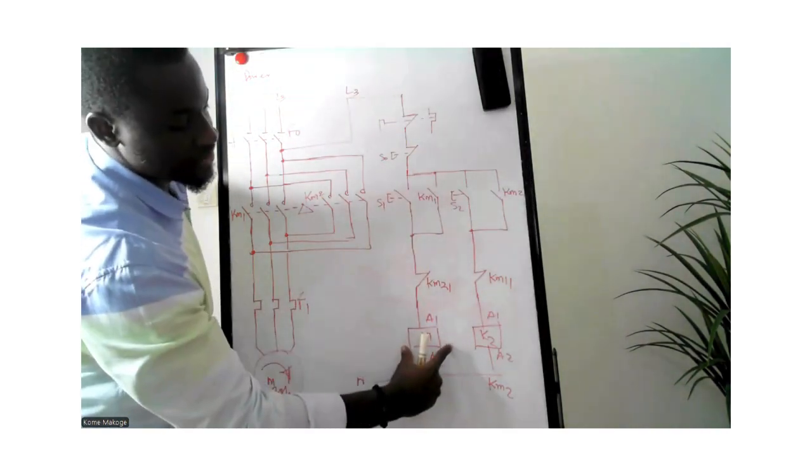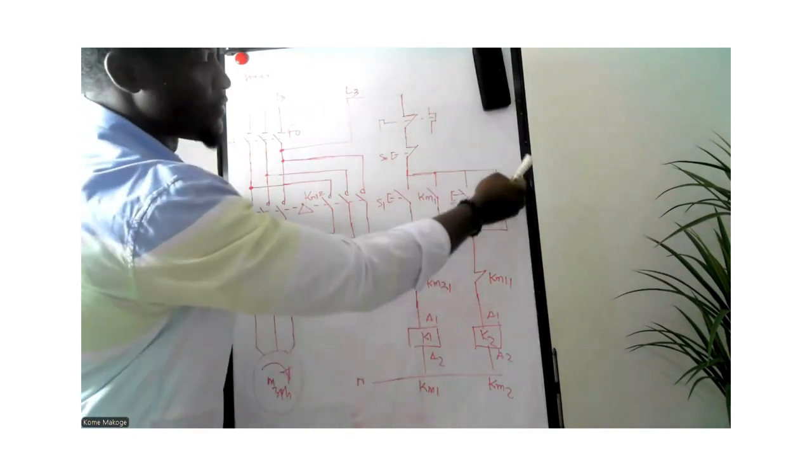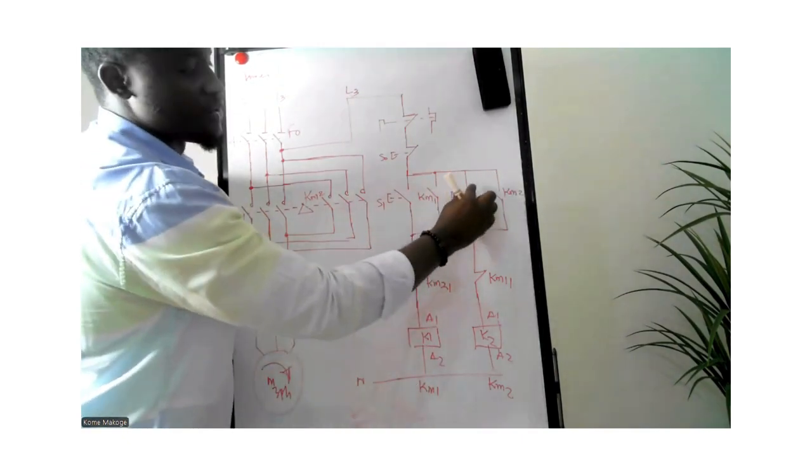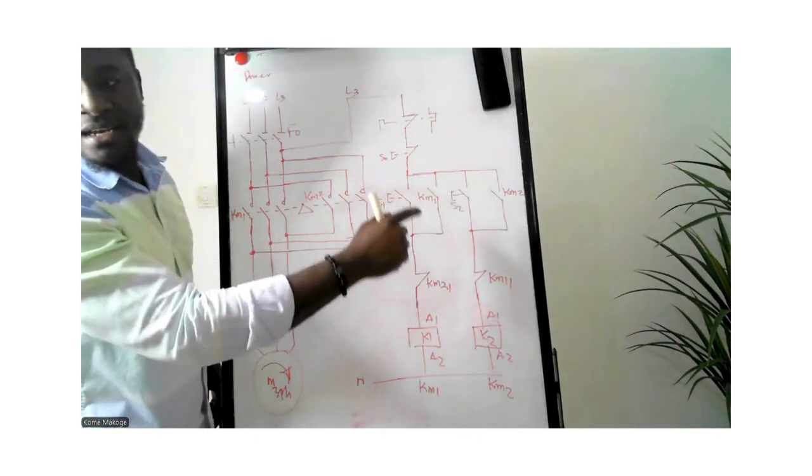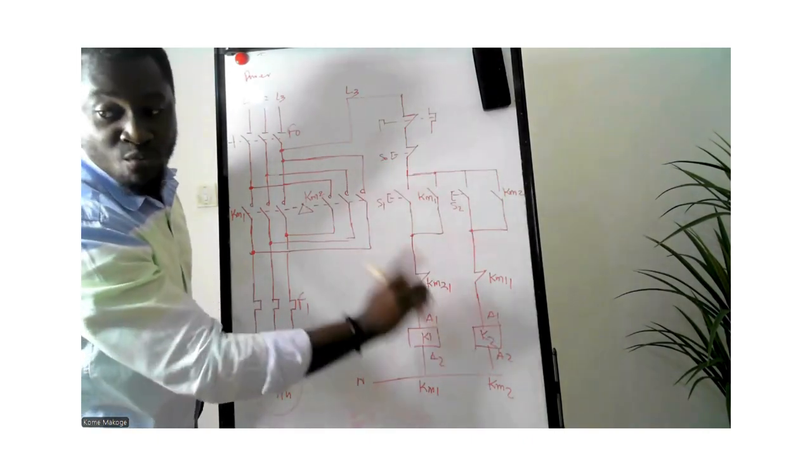Moving down, this is a coil which is A1 and A2, K1. Moving to the other side, S2 is an open contact which represents a stop push button of the contactor KM1.